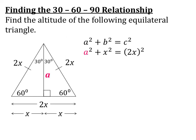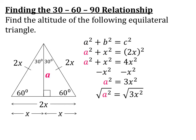I know (2x)² is the same thing as 4x², so a² + x² = 4x². I need to subtract x² from both sides, so I have a² = 3x². I need to get a by itself, so I take the square root of both sides, and I'm left with the square root of 3x².